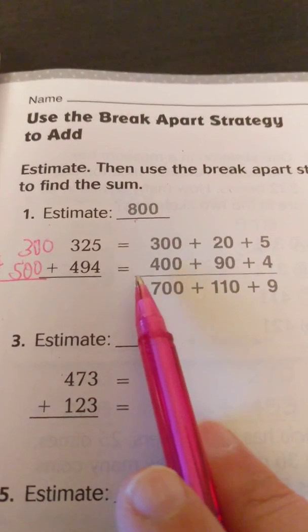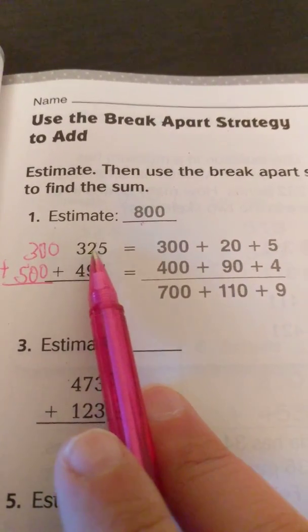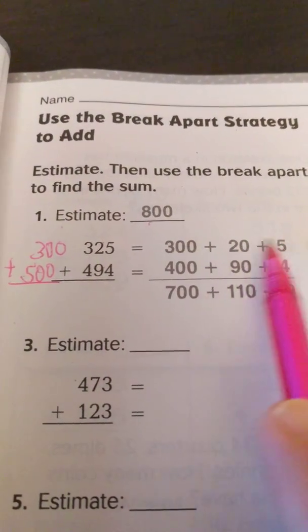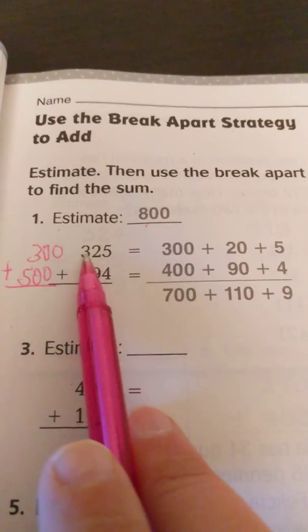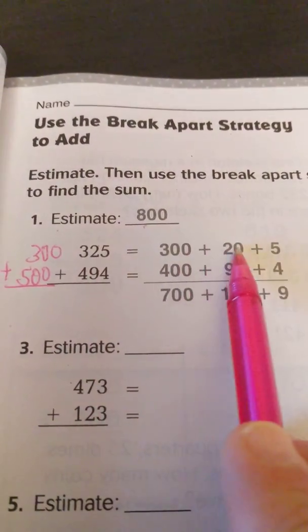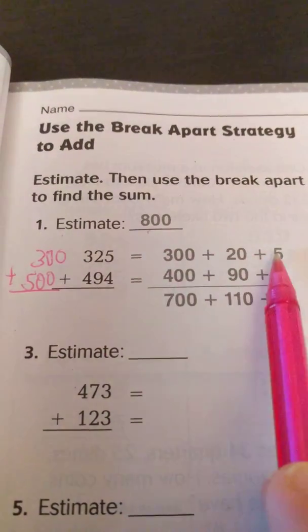Now we're looking at the expanded form. So all they did was break apart the hundreds, tens, and ones. Hundreds, tens, ones. So 3 hundreds, 2 tens, or 20, and 5 ones.